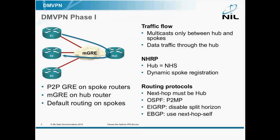Phase 1 first. As I said, point-to-point GRE on the spoke routers, multi-point GRE on the hub router. Spokes just need a default route toward the hub router — that's all they need. Data traffic goes through the hub. It's a pure hub-and-spoke topology.